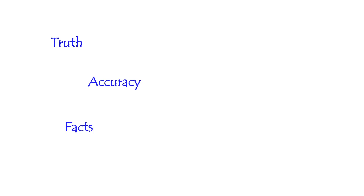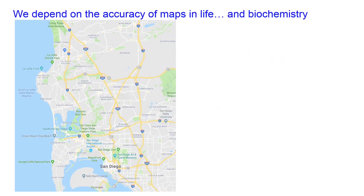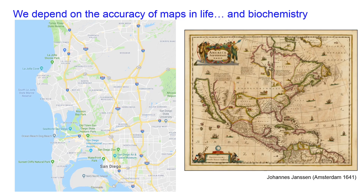Truth. Accuracy. Facts. We depend on accurate information every day of our lives. We often take for granted that the information around us, such as maps of the cities we live in, are correct. But this hasn't always been the case. Even recent maps of the United States sometimes depicted California as an island, which can cause obvious problems if you're headed toward the Bay of California.